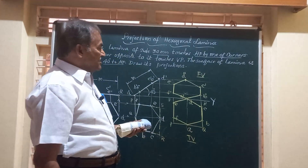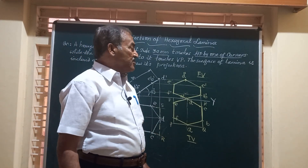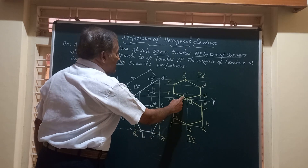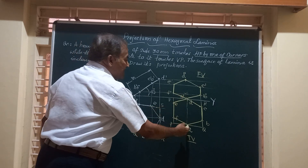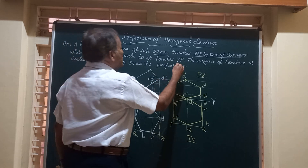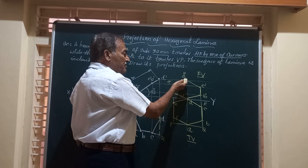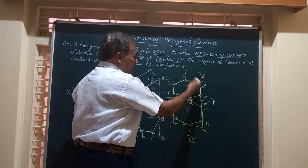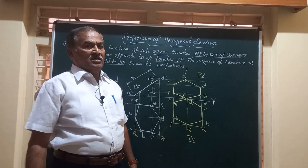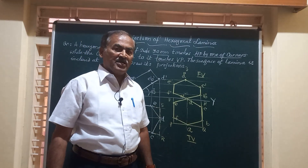To verify the solution: corner A is resting on HP, so A-dash appears on XY in the front view and A is the top view point. The opposite corner D is touching VP, so D-dash appears above XY in the front view and its top view is on the XY line. This confirms the solution is correct. Thank you very much and have a wonderful day.